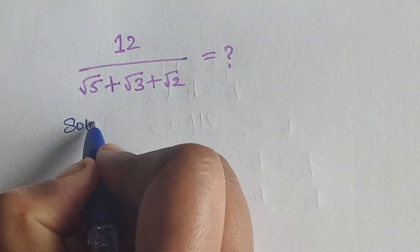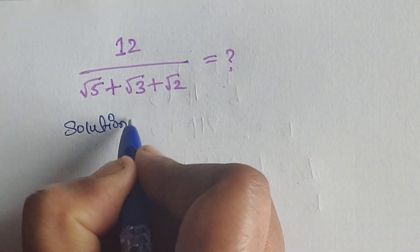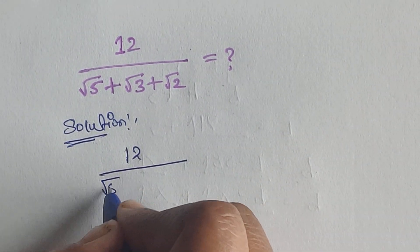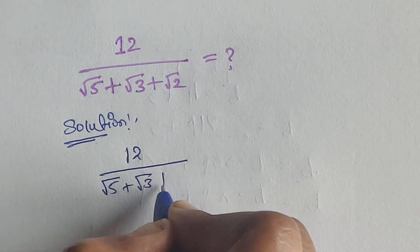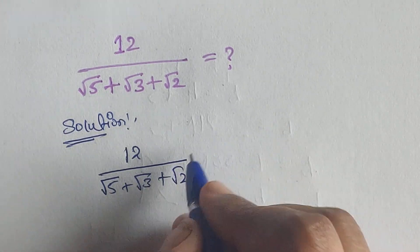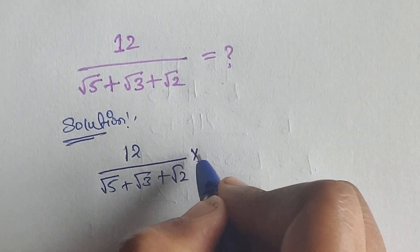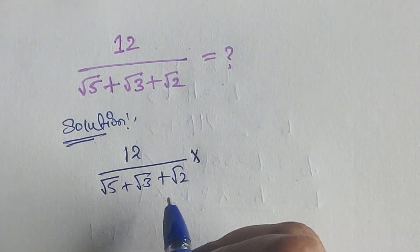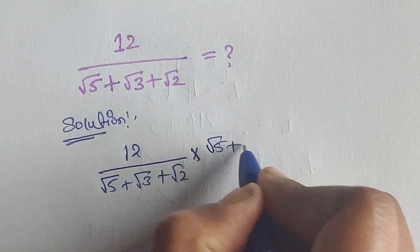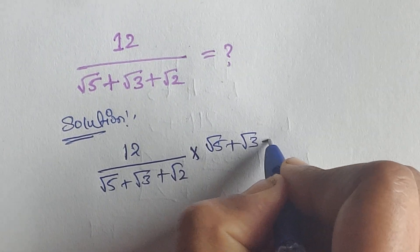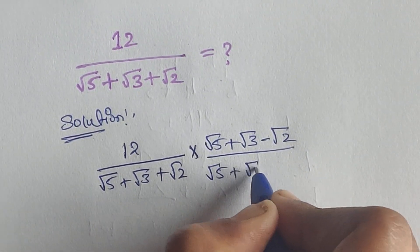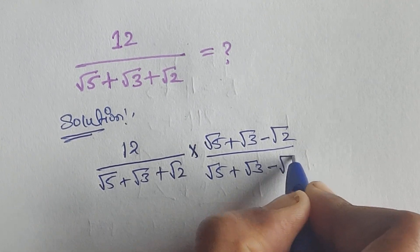Solution: 12 divided by square root of 5 plus square root of 3 plus square root of 2. Now we have to rationalize — so multiplying numerator and denominator by square root of 5 plus square root of 3 minus square root of 2, divided by square root of 5 plus square root of 3 minus square root of 2.